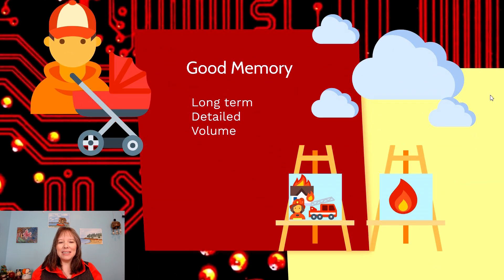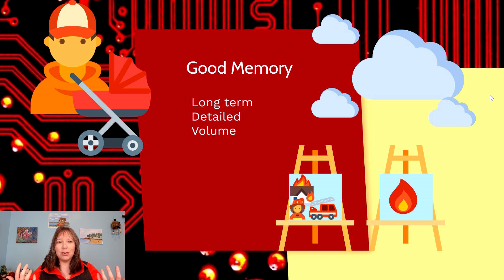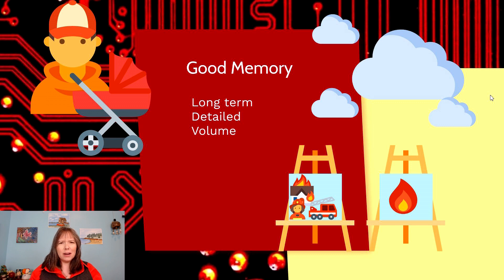A good memory could be one of three different types. It could be something where you're able to hold images or information in your mind for a long period of time — you may be able to recall things that happened very early on in your lifetime. Or if your memory is not so good, maybe you can only recall things from more recently and can't think back to your early childhood.